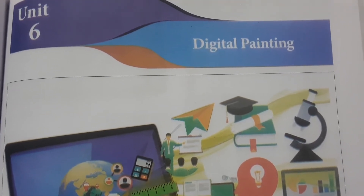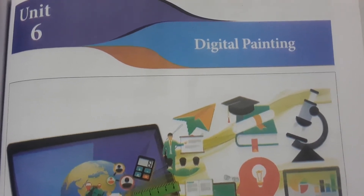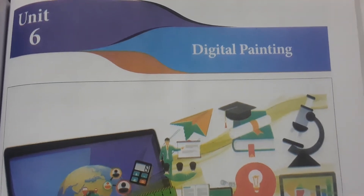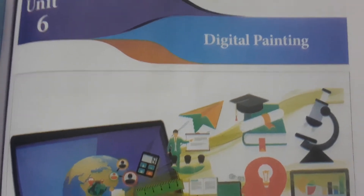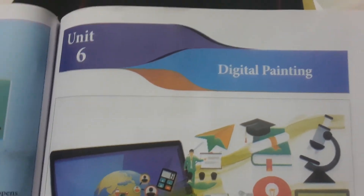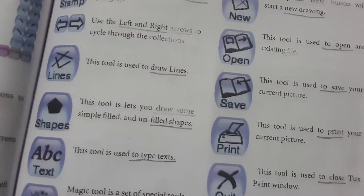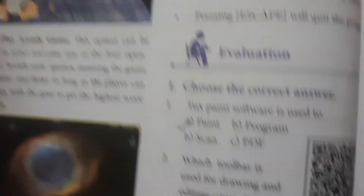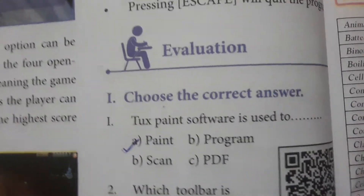Today we are going to see the book pack exercises from Unit 6, Digital Painting. This is for Class 7. Digital painting is about how painting software is utilized with the help of computers. That is the lesson of this unit. We will see the evaluations of the book pack — the first section: choose the correct answer.